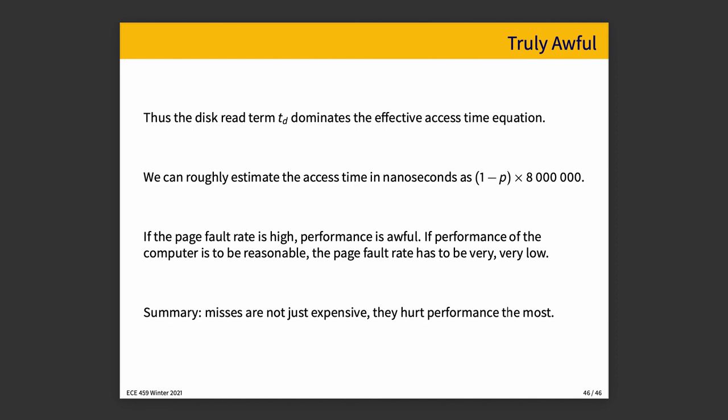In conclusion, misses are very expensive and hurt performance quite a lot. Hardly anyone has a magnetic drive in their laptop anymore, but if you're looking to speed up an old machine for a family member, replacing a spinning hard drive with a solid state drive is one of the best things you can do. When SSDs were released, the change was a revelation compared to 7200 RPM drives — there's really no comparison. I hope that gives you a better understanding of cache misses and why we want to avoid them.